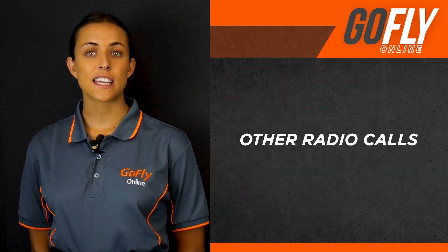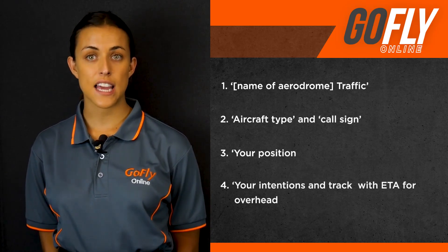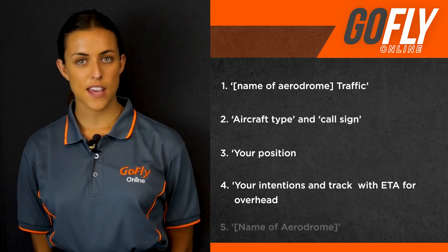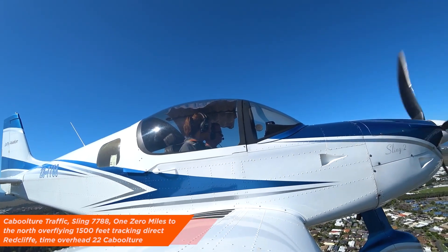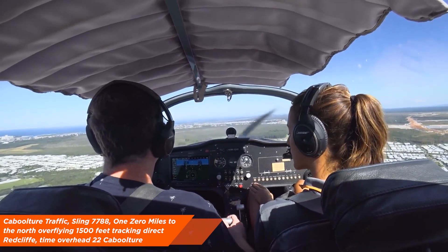Other radio calls. If you think there is any chance of a potential conflict with another aircraft, give them a radio call. A common scenario is when you depart and another aircraft may be inbound at the same or similar height — be proactive and advise the other aircraft that you will maintain at least 500 feet of separation until you have the other aircraft visual. If you are transiting an aerodrome or overflying, you should also give a call. The call should include the name of the aerodrome, traffic, aircraft type and call sign, your position, your intentions and track with an ETA for overhead, followed by the name of the aerodrome. An example: Caboolture traffic, Sling 7788, 10 miles to the north, overflying 1,500 feet, tracking direct to Redcliffe, time overhead 22, Caboolture.